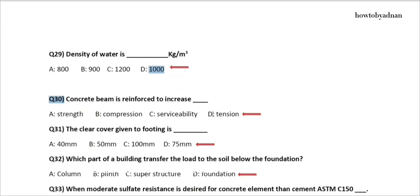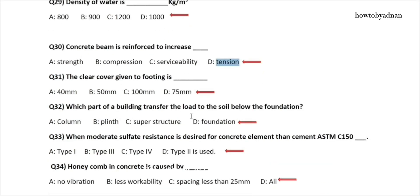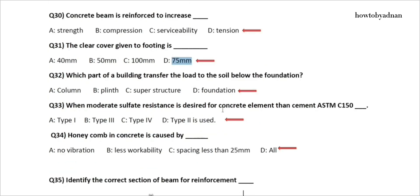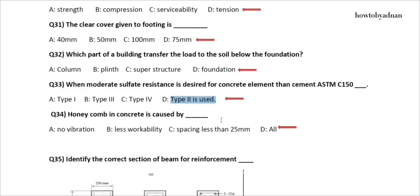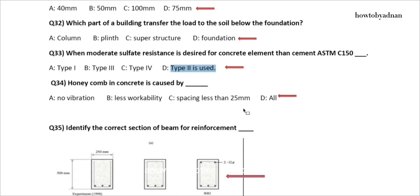Question 30: Concrete beam is reinforced to increase? The answer is option D: Tension. Question 31: The clear cover given to footing is? The answer is option D: 75 millimeters. Question 32: To which part of a building transfers the load to the soil below the foundation? The answer is option D: Foundation. Question 33: When moderate sulfate resistance is desired for a concrete element, then cement ASTM C-150? The answer is option D: Type 2 is used.